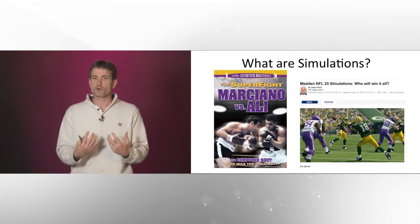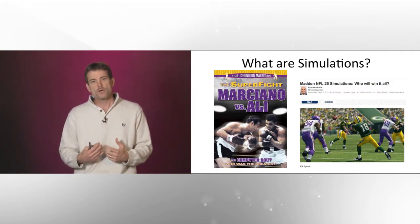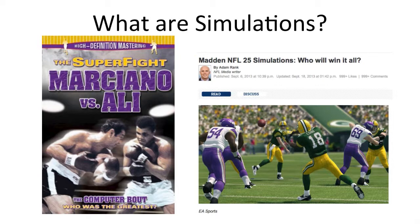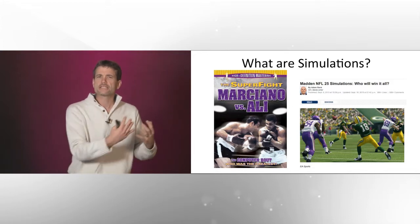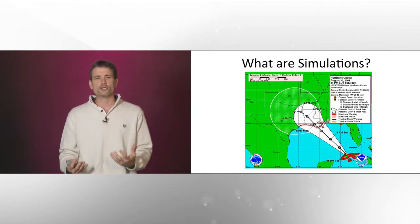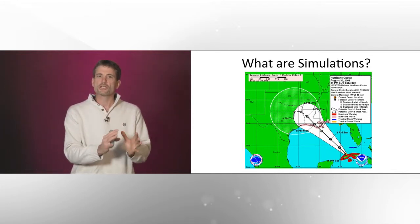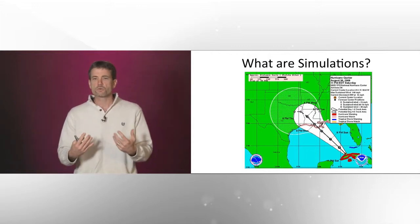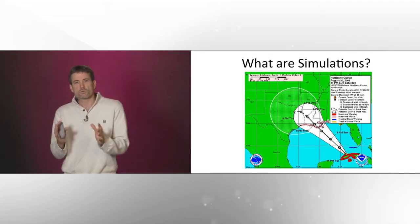Notice that the purpose of the Ali-Marciano simulation was to predict what would happen in a boxing match. On your right you'll see a prediction from Madden's NFL 25 simulation, predicting who will win the Super Bowl. Again, the simulation's purpose is about predicting what will happen. Similarly, computer simulation in weather forecasting is about predicting the progress of a hurricane — what time and location it will hit the U.S. border. That's really what those simulations are about: prediction.